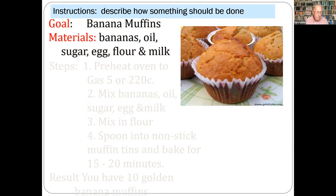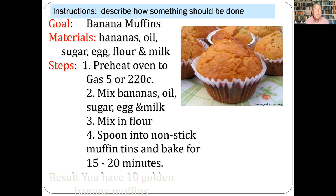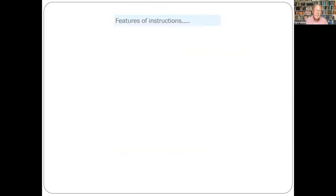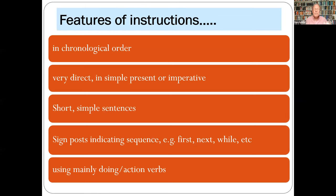Instructions are different — they describe how something should be done. They usually consist of a statement of what's to be achieved, a list of materials and equipment needed, a series of sequential steps, and a coda showing what you've done. The main features are that they're written in chronological order, direct and simple with imperative sentences, focus on generalized human groups, use short simple sentences, signposts indicating sequence, and action verbs.